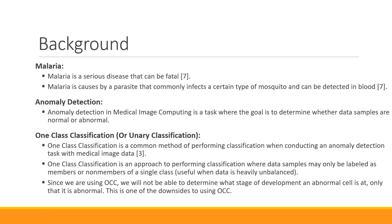Some background on malaria: it's a very deadly disease caused by a parasite that is often transmitted by mosquitoes, and you can detect it in blood by looking for the parasite's effects on red blood cells. The type of task we're doing is anomaly detection — a very common task in medical image computing when using imbalanced datasets, where instead of classifying a sample into one of many classes, you're just asking: is this normal or abnormal? Abnormal being like an outlier.